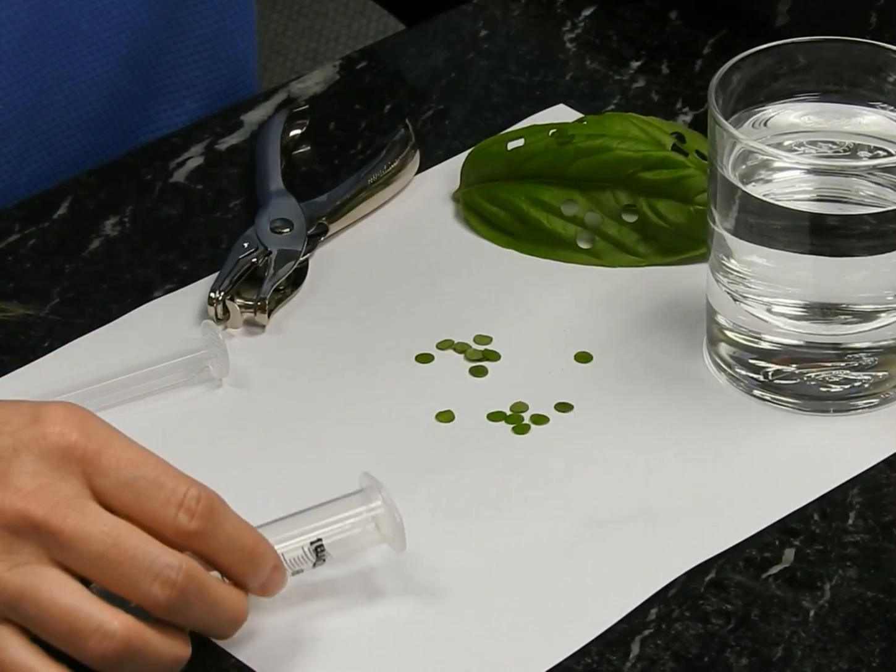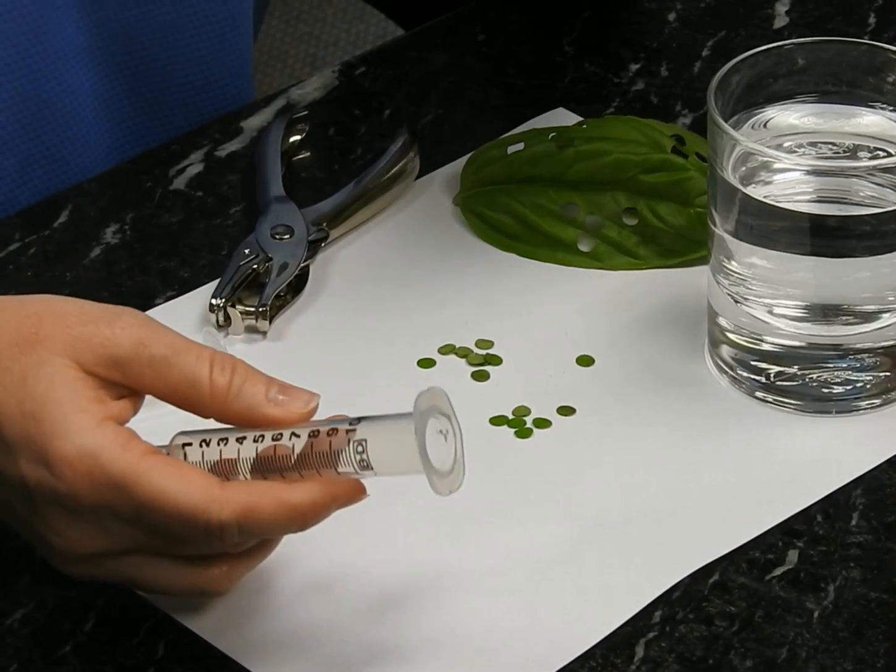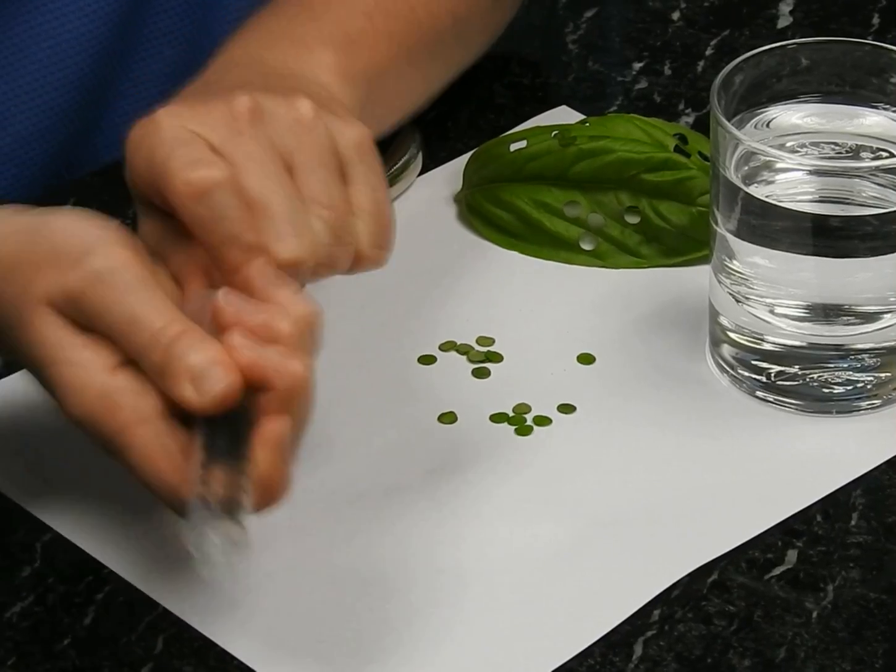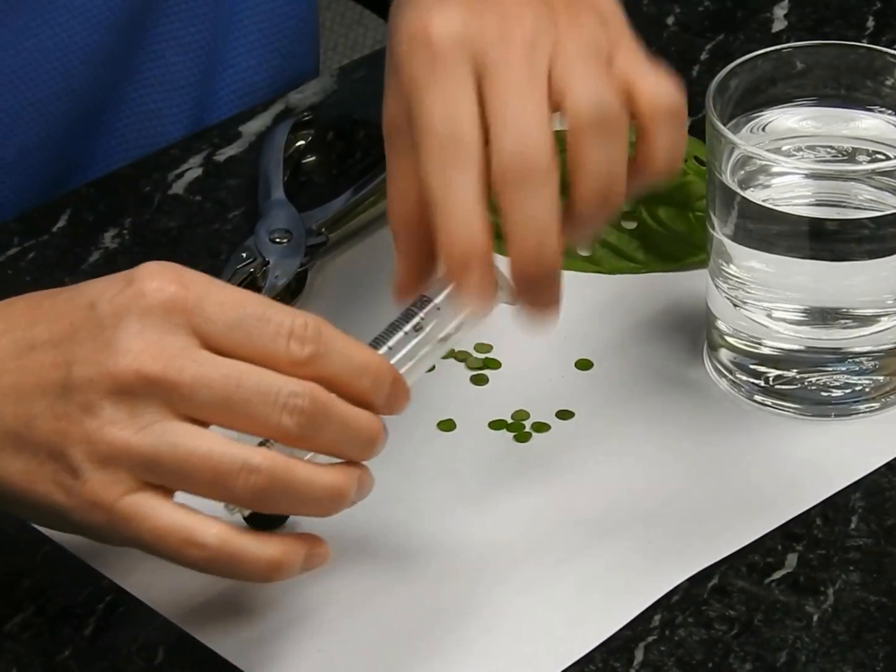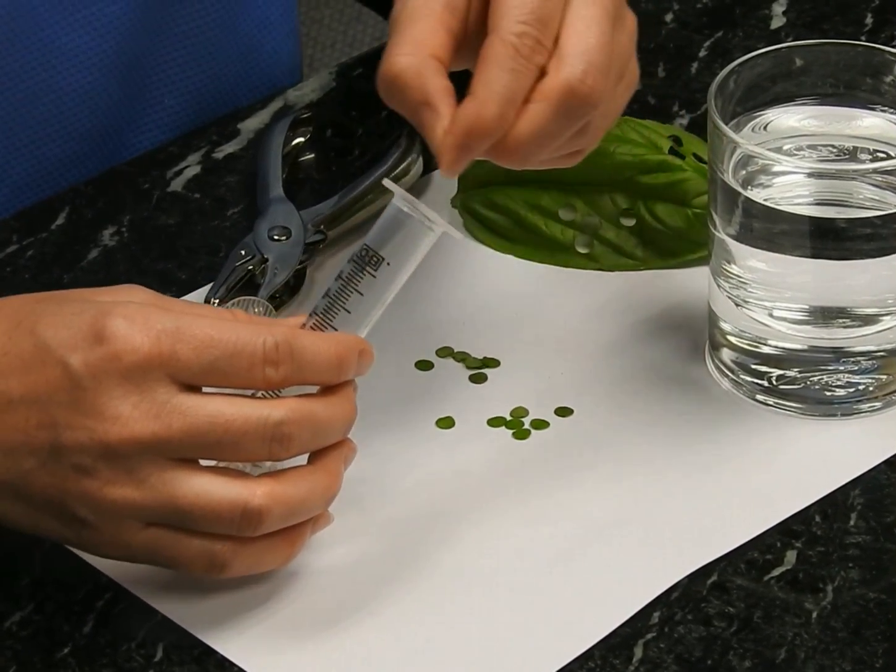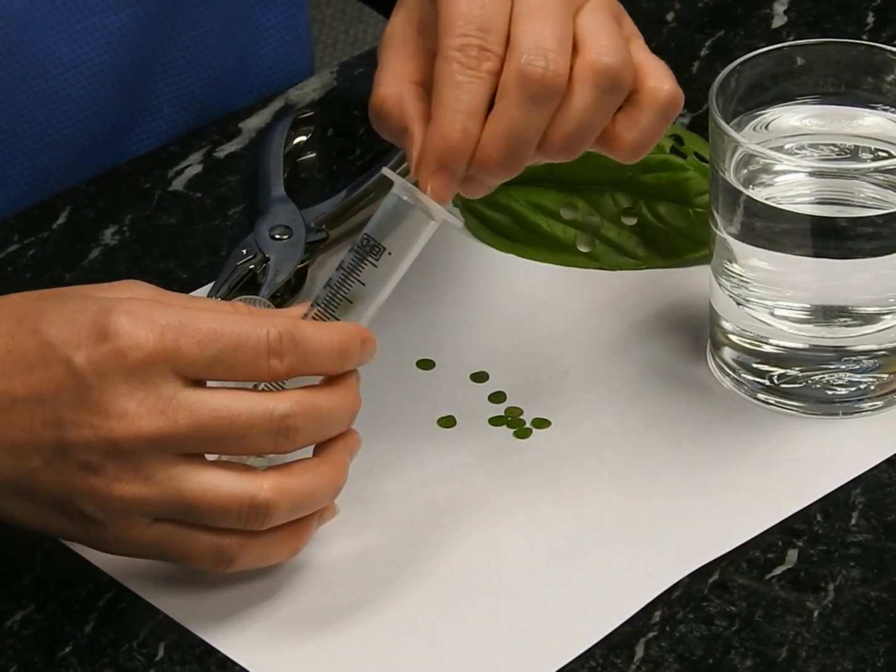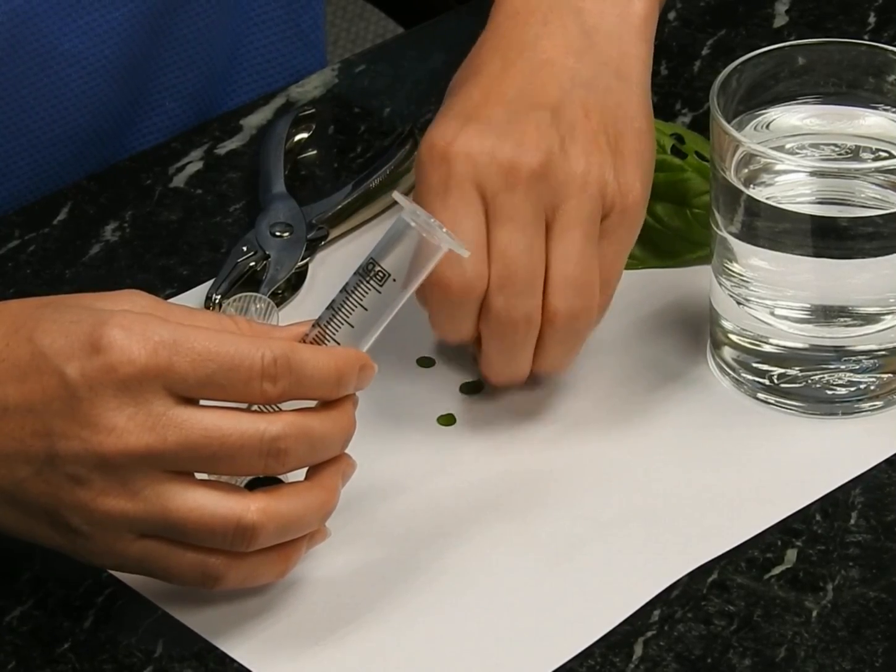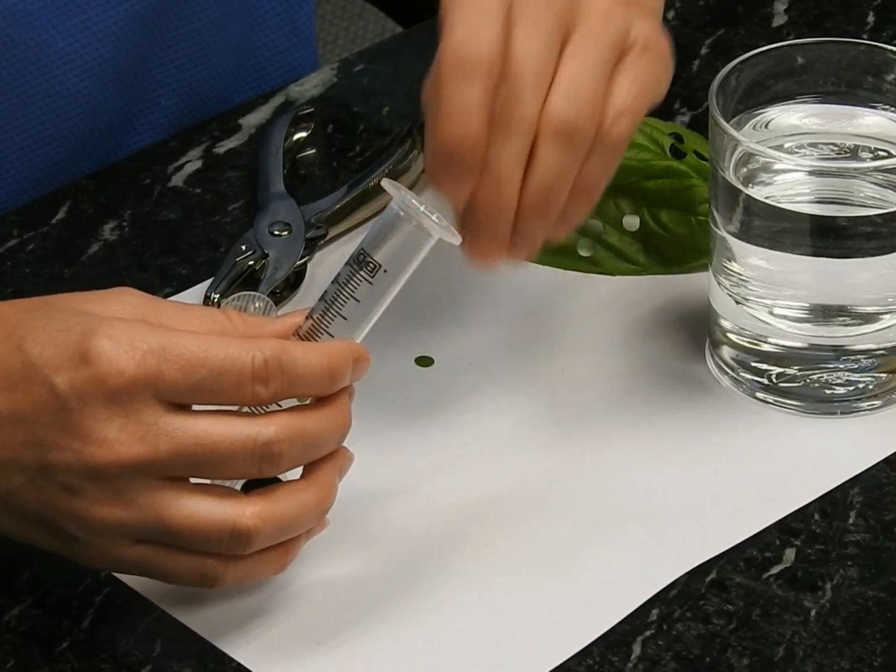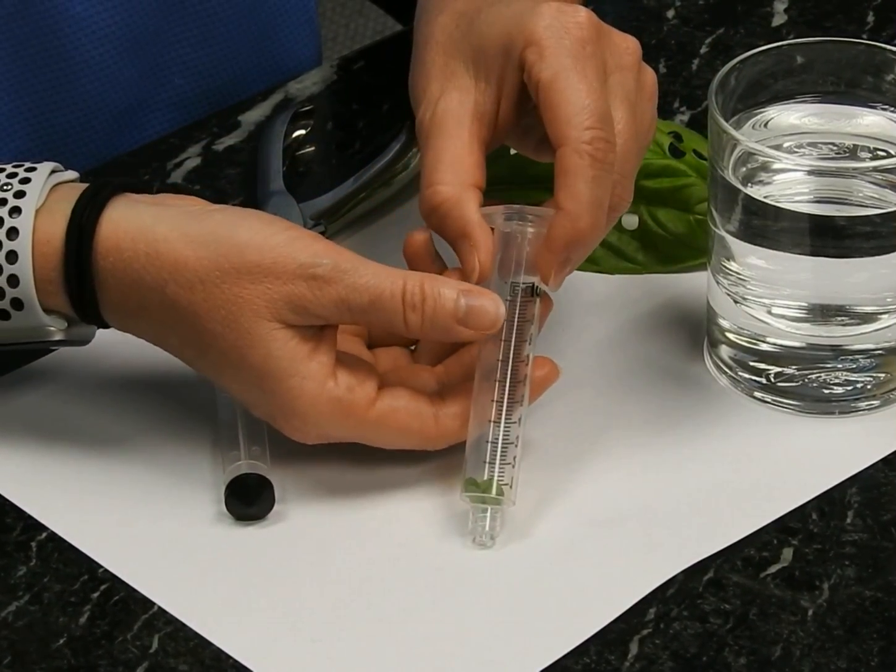Once you've cut your disks, you're going to carefully insert them into the barrel of a syringe. I've pulled the barrel out, it's pretty simple. Then pick up these little disks one by one and put them into your barrel here. Once you have them in, gently tap them to the bottom, and they're all at the bottom now.